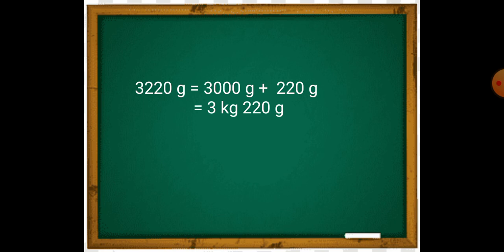So 3,000 grams is equal to 3 kg. 3,000 grams plus 220 grams is equal to 3 kg and 220 grams. The mass of dog is 3 kg and 220 grams.